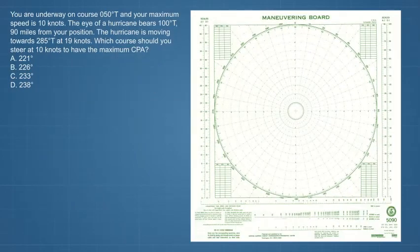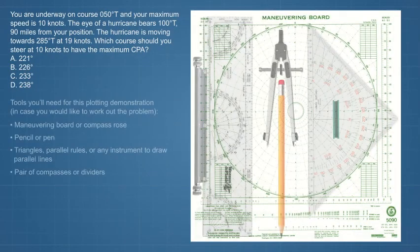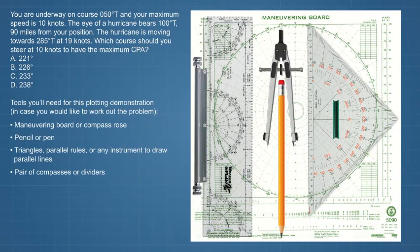Tools you'll need for plotting this demonstration are a maneuvering board or compass rose, pencil or pen, triangles, parallel rules or any instrument to draw parallel lines, and a pair of compasses or dividers.